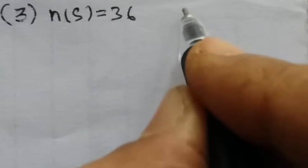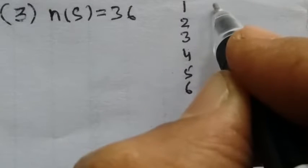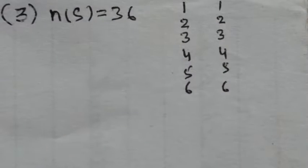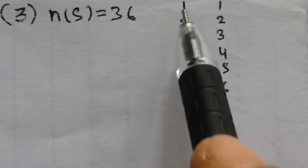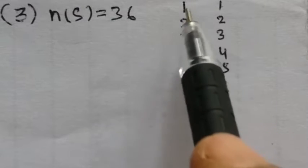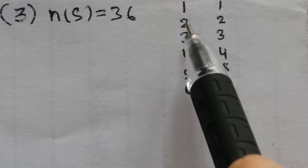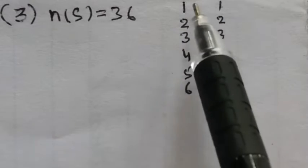The first die can show 1, 2, 3, 4, 5, or 6, and for each outcome of the first die, the second die also has 6 possible outcomes. For example, when the first die shows 1, we get combinations (1,1), (1,2), (1,3), (1,4), (1,5), (1,6) — that's 6 outcomes. Similarly for each value of the first die. So in total, 6 times 6 gives 36 outcomes in the sample space.